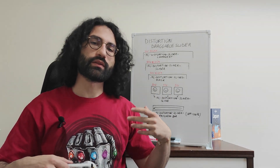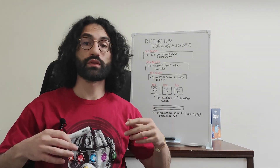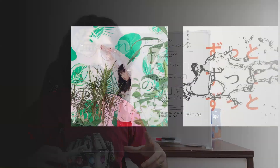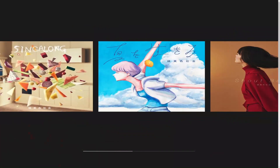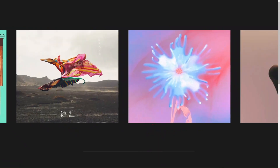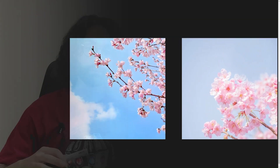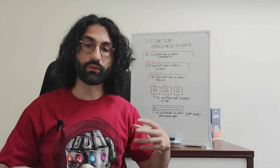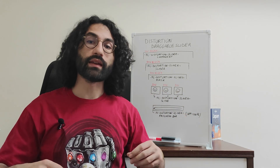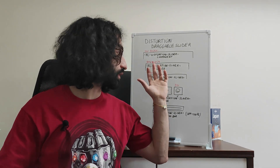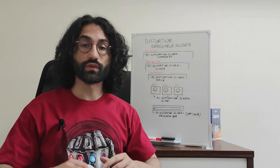In today's video we are going to build a distortion-draggable slider, an attributes-only solution so you won't need to code, and we are going to build a project that will look exactly like this. This project will be available inside my Webflow friendly components library and I will put the link to this library, which is a Webflow clonable, and to the instructions page containing all the steps required to configure the slider in the description down below.